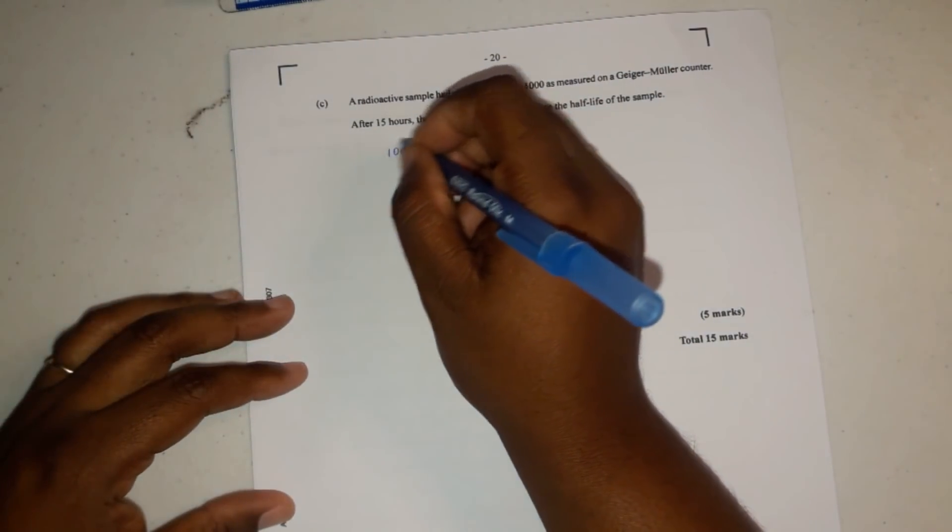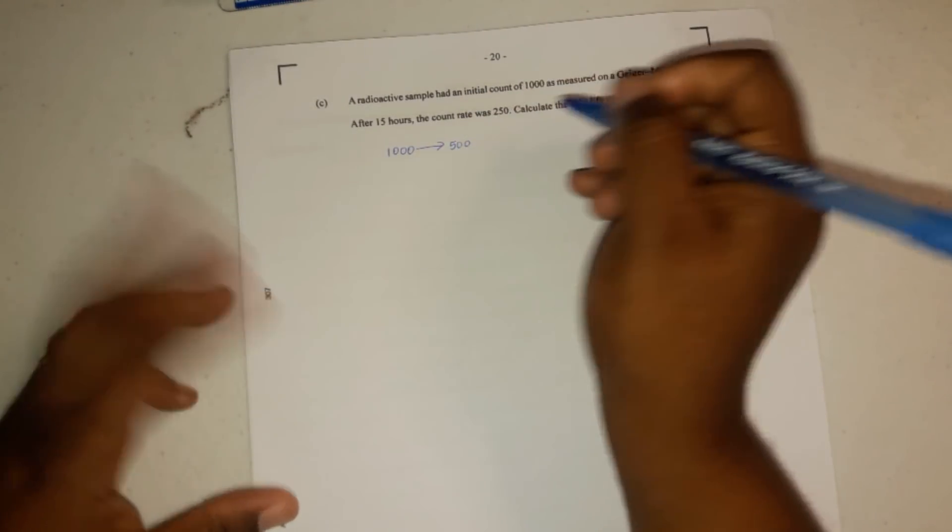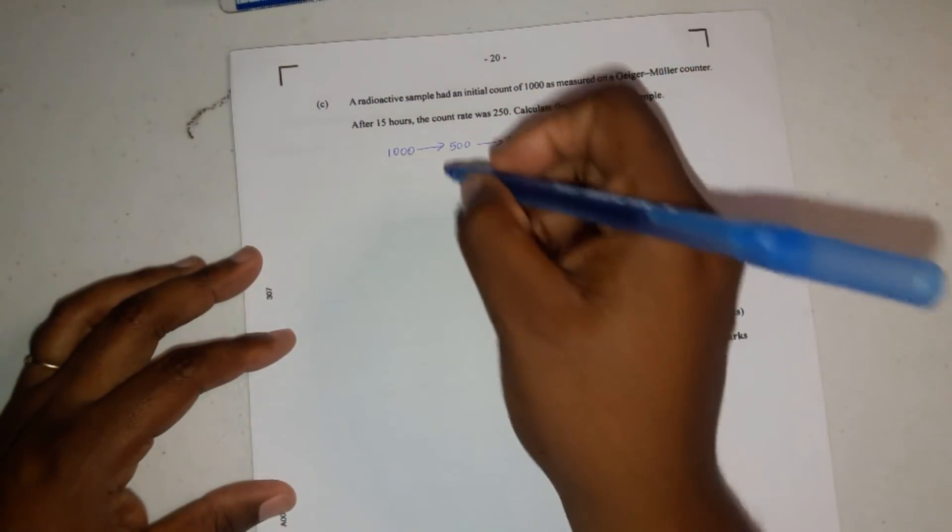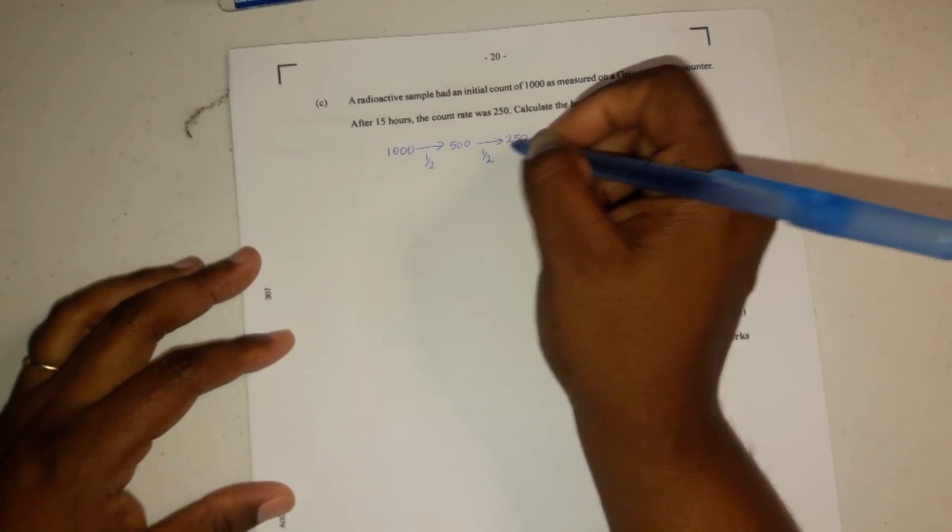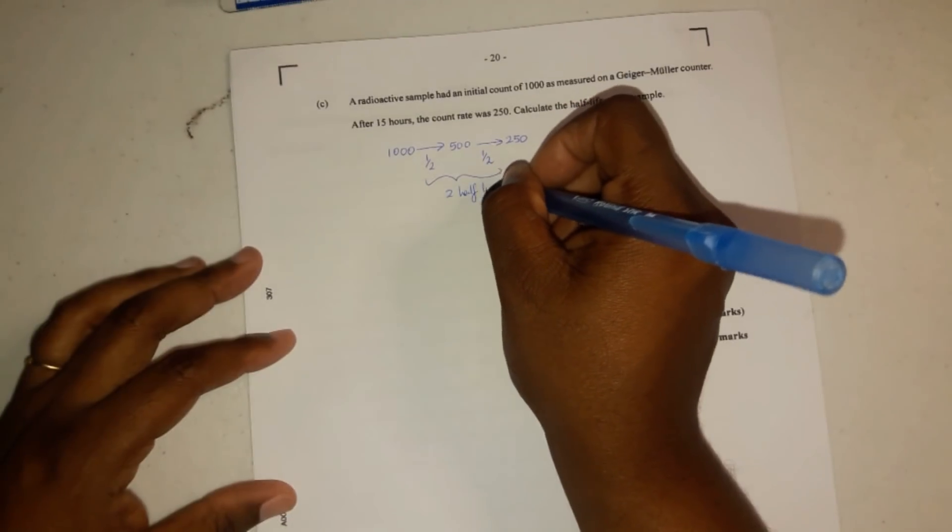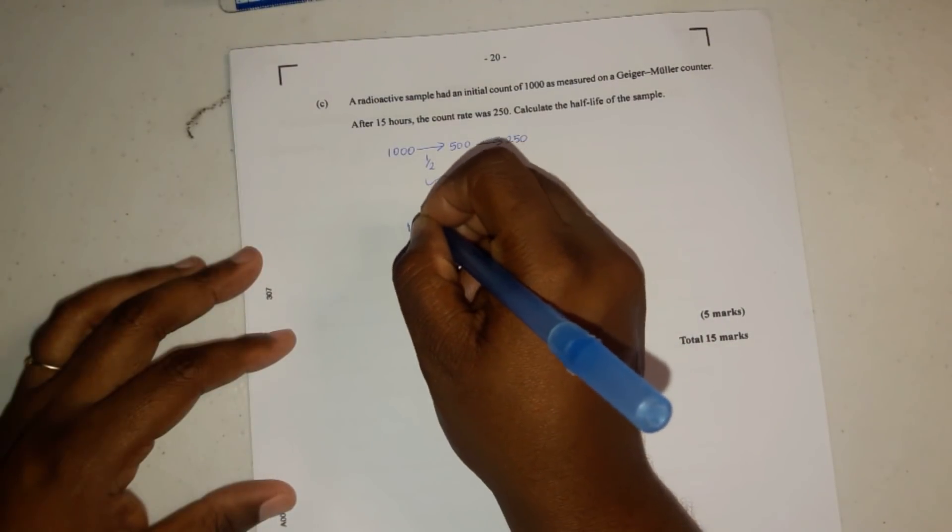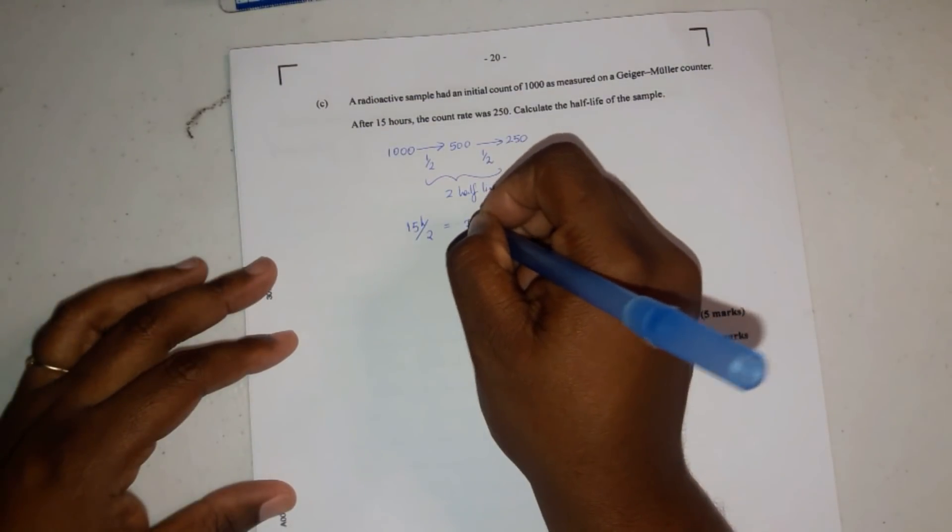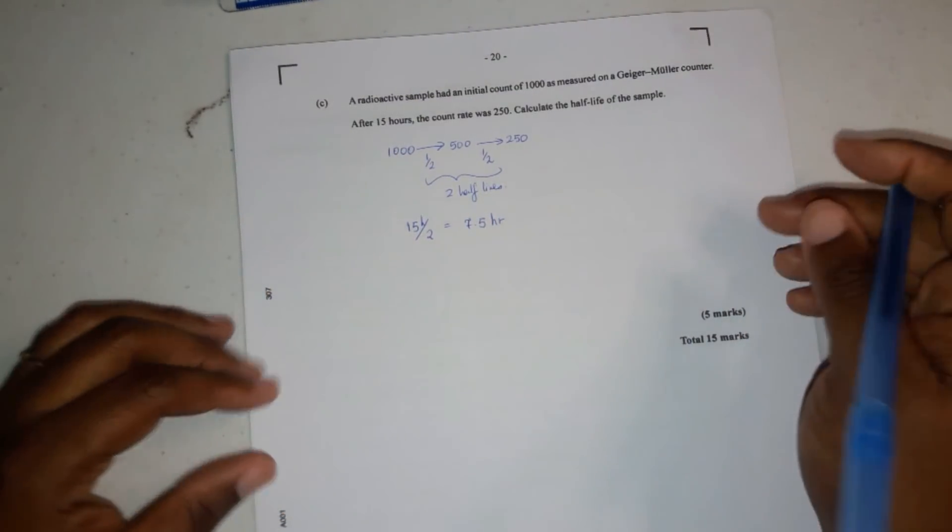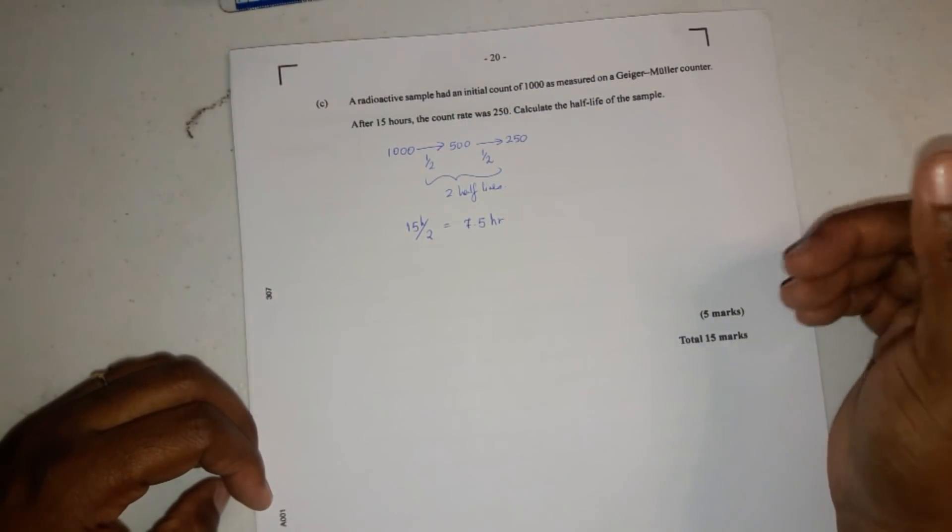Okay, so if the original amount is 1,000, then it should break down to half of that, which is 500, and then half of this, which is 250. And so we know we had to pass through two half-lives. So this equals two half-lives. So since that's the case, 15 hours divided by 2 would equal 7.5 hours, right? So every 7.5 hours, the sample breaks down by half its amount.